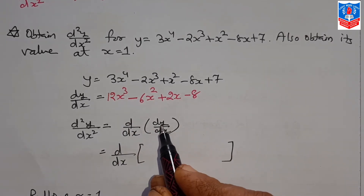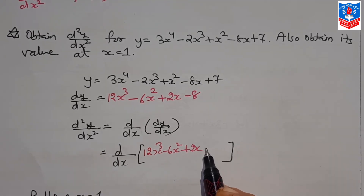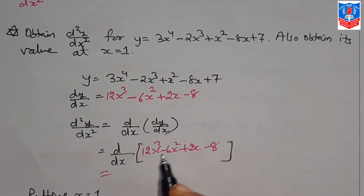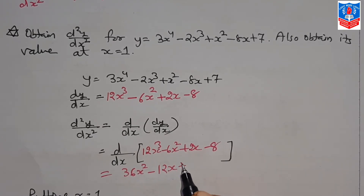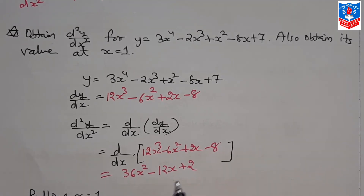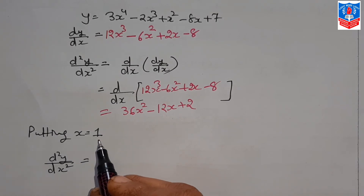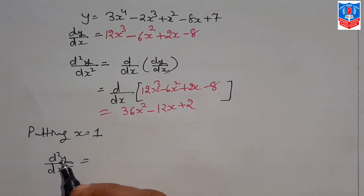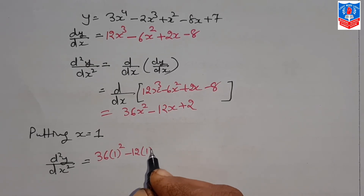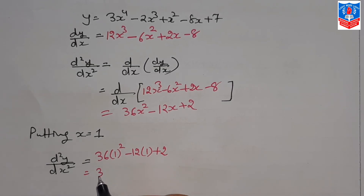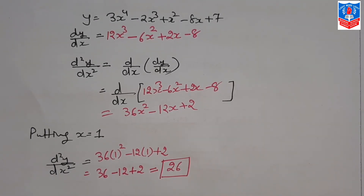d²y/dx² is the derivative of dy/dx = 12x³ - 6x² + 2x - 8. Differentiating: 12×3 = 36x², 6×2 = 12x, and the derivative of 2x is 2. The constant -8 gives 0. So d²y/dx² = 36x² - 12x + 2. Now, substituting x = 1: 36(1)² - 12(1) + 2 = 36 - 12 + 2 = 26. The final answer is 26.